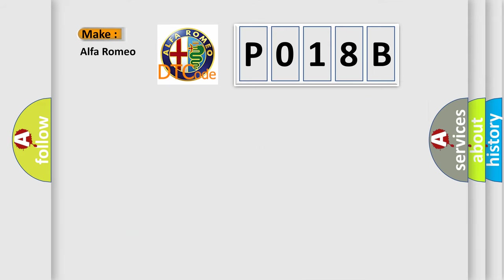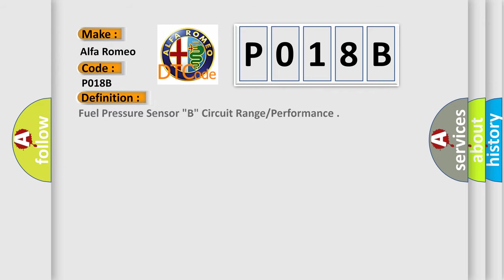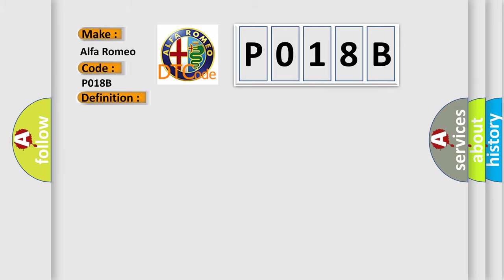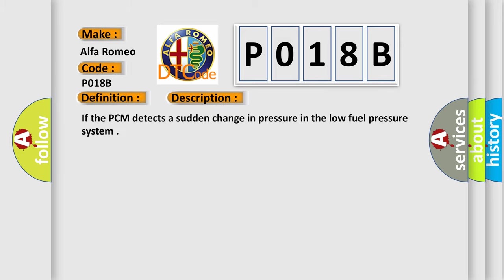What does the diagnostic trouble code P018B interpret specifically for Alfa Romeo car manufacturers? The basic definition is: fuel pressure sensor B circuit range performance. Here is a short description of this DTC code.